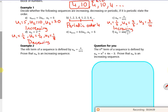The next one, if u1 is 5, then u2 is a half of u1, so that's 5 over 2. U3 is a half of u2, so that's 5 over 4. So the values are going down, so that's decreasing.